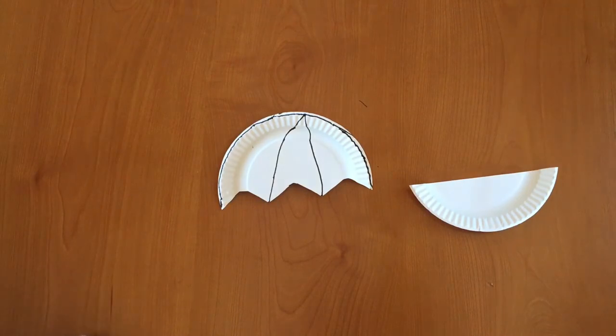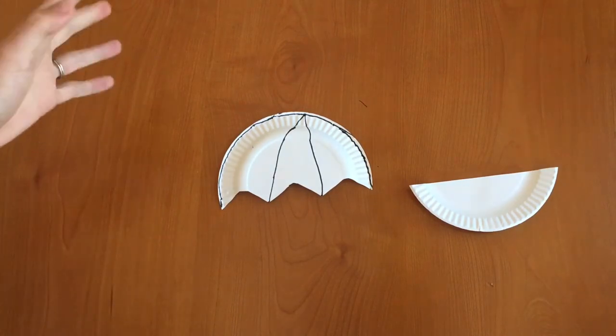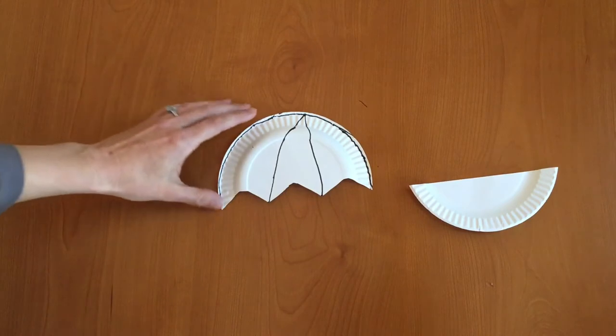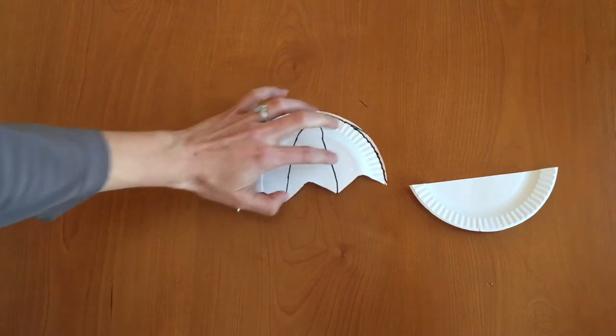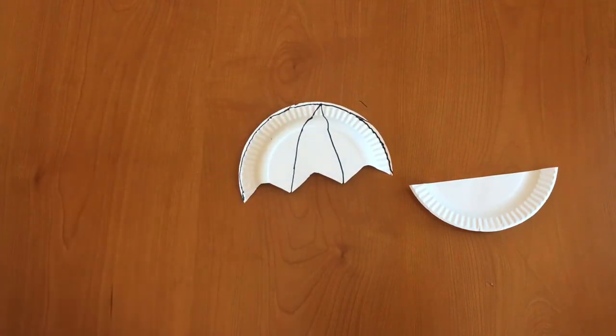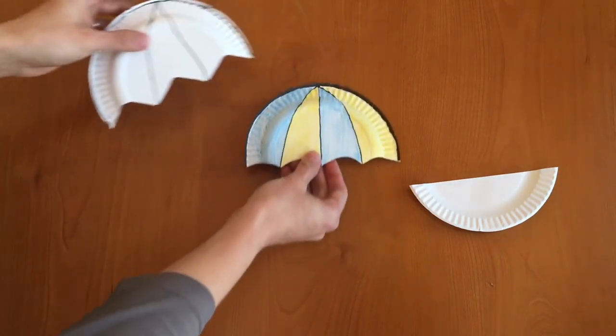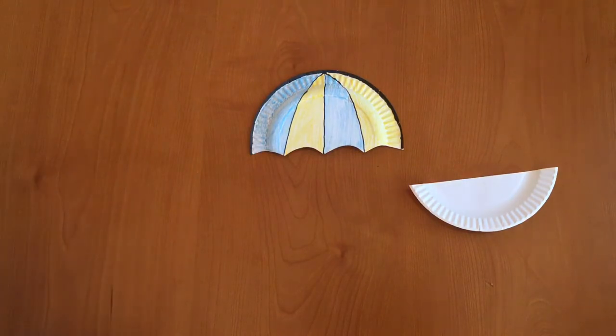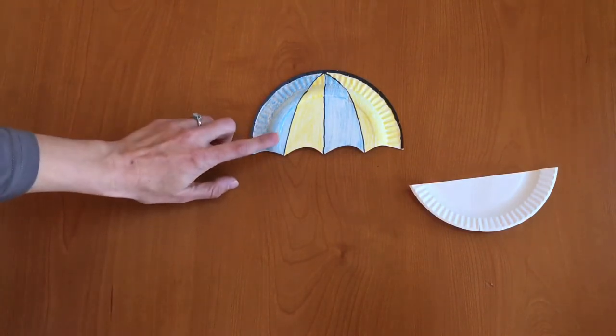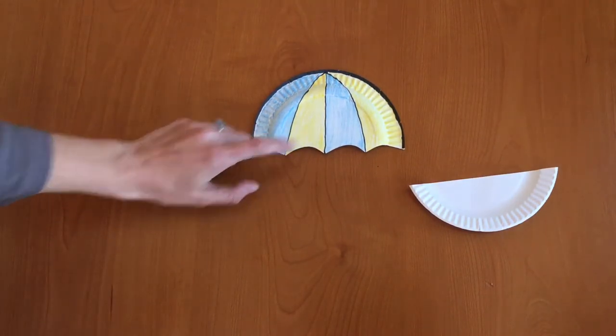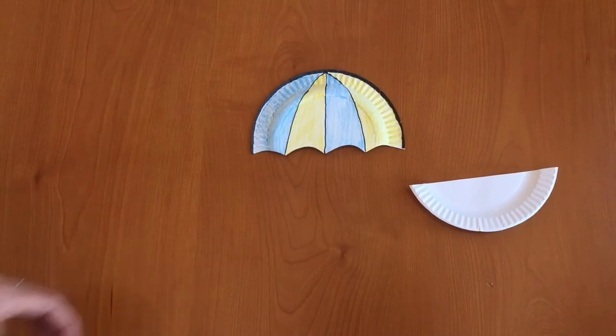Next you're going to want to take either paint or markers or crayons or colored pencils and color in your umbrella. You can decorate it however you like. So I have prepared this umbrella for myself. I colored it in with colored pencils, blue and yellow, and now let's move on to the next step.